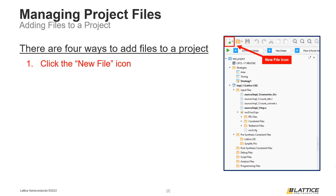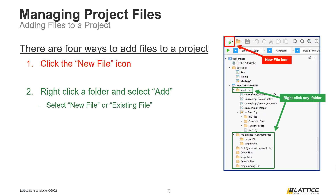The first way to add files to a project is to click the new file icon in the toolbar. This will open the new file creation window. The second way is to right-click a folder in the File List tab. From the drop-down that appears, users can either select New File or Existing File. The New File option will open the new file creation window, while the Existing File option will open a file explorer window, where users will be able to select existing files to import to a project.